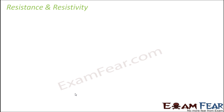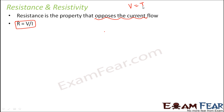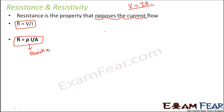Now that we've introduced resistance, let's talk about resistance and resistivity. Resistance is the property that opposes current flow — it always opposes current. Resistance is given by R = V/I from Ohm's Law. There is also another expression: resistance equals ρL/A, where ρ is the resistivity of the material, L is the length of the conductor, and A is the cross-sectional area of the conductor.